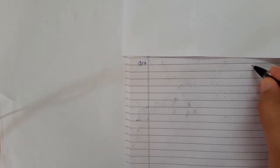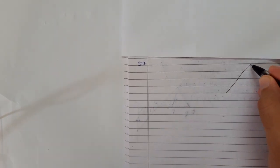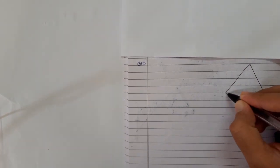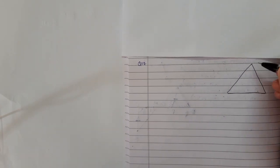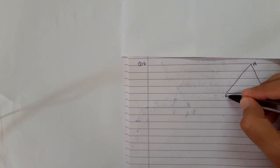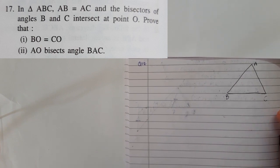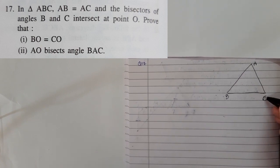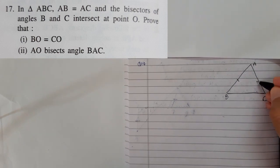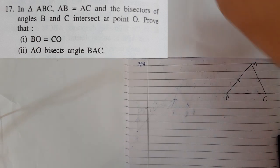In the next question, we have a triangle ABC where AB equals AC. Let's mark them and write that information down.